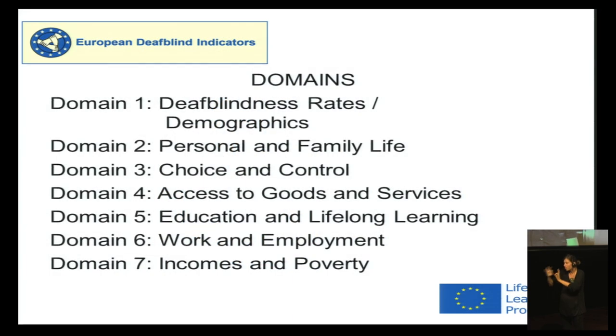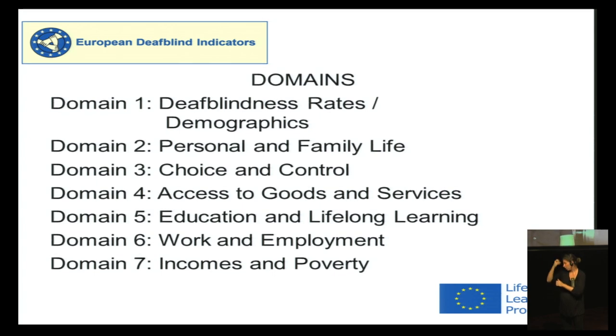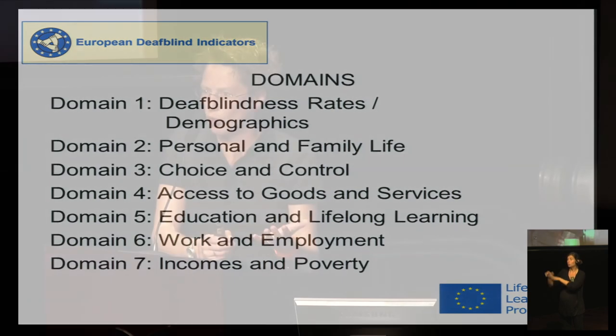Domain four, access to goods and services, covers questions about legal rights to goods and services. So it includes, for example, rehabilitation, special equipment, technical equipment, or access to public buildings and transport. Domain five, education and lifelong learning, covers the educational provision. Domain six, work and employment, covers issues relating to employment opportunities.